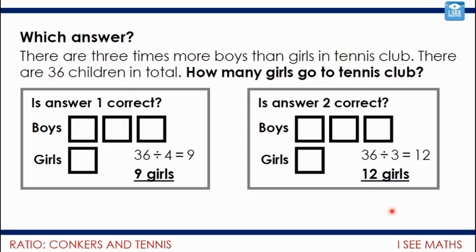Both drawings have drawn the ratio correctly as 3 to 1. What's different? It says there are 36 children in total, so these four sections have to equal 36. To find the value of each section: 36 divided by 4 is 9. So there will be 9 girls and 27 boys. The mistake in the other drawing was doing 36 divided by 3 — it doesn't say there are 36 boys, it says there are 36 children.